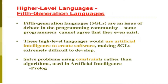Now we come to the fifth generation languages. Nowadays we are also using fifth generation languages. The fifth generation language is the last generation and is an issue of debate in the programming community. Some programmers cannot agree that fifth generation languages even exist, because most programmers did not work in that area. These high-level languages use artificial intelligence to create software — have you heard the term artificial intelligence before? Artificial intelligence is basically when you write a code that can create its own code according to its need.